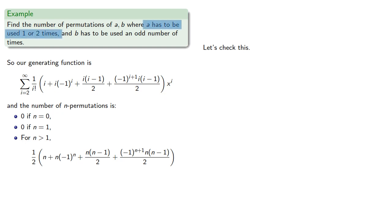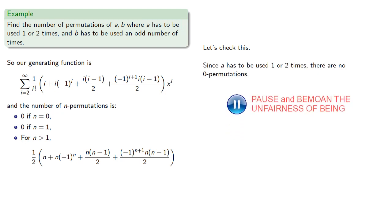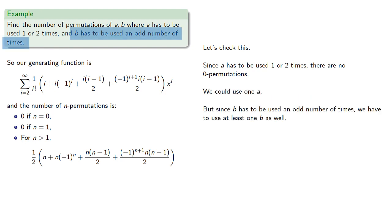Since a has to be used 1 or 2 times, there are no 0 permutations. We could use 1a, but since b has to be used an odd number of times, we have to use at least 1b as well, and so there are no 1 permutations either.